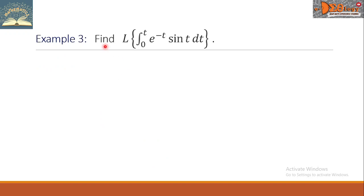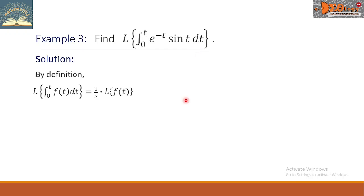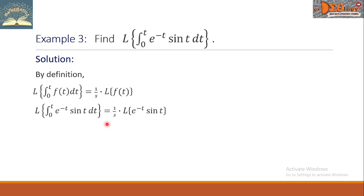Example 3: Find the Laplace transform of the definite integral from 0 to t of e raised to negative t multiplied by sine t dt. Using the definition for the Laplace transform of an integral, this equals 1 over s times the Laplace transform of e raised to negative t times sine t.